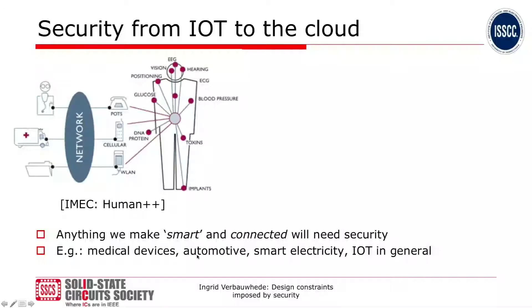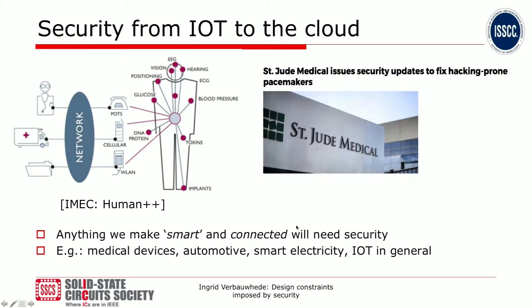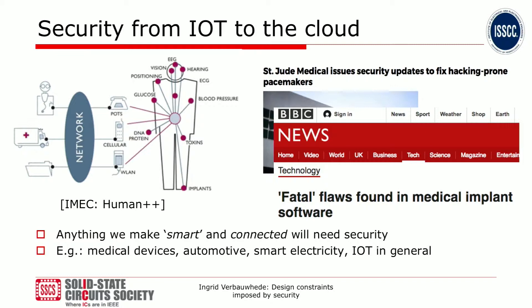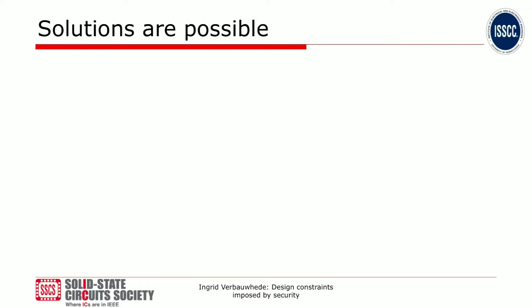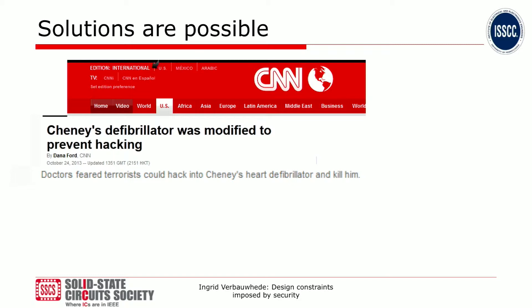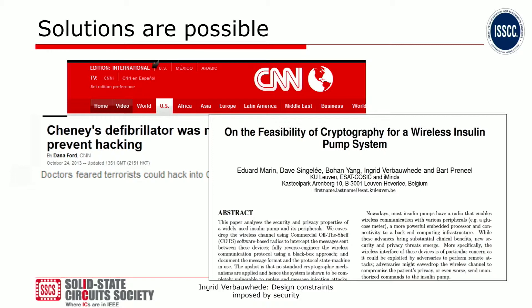This applies to medical devices, automotive, smart electricity, and IoT in general. The problem is that we see a bunch of attacks appearing. One from the newspapers reported a recall for hacking-prone pacemakers. Another, which hit BBC News, found fatal flaws in medical implants. But solutions are possible. One example from CNN News shows that some defibrillators can be modified to prevent hacking. More seriously, we have been looking at adding crypto to some of these medical devices. The same applies to smart meters and automotive — they all need security added.